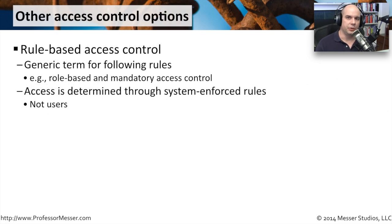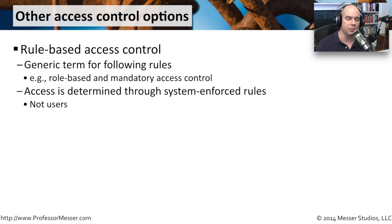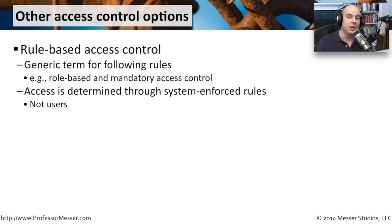You may hear access control referred to as rule-based access control. This is more of a high-level way to describe how rights and permissions are given out. Two types that fall under rule-based access control are role-based and mandatory access control, because those access control methods are determined by the system, not by individual users. These predefined rules and processes give access to certain people based on a group they might belong to or a particular security level, and it doesn't matter what a user wants — your systems make sure everything remains as secure as possible.